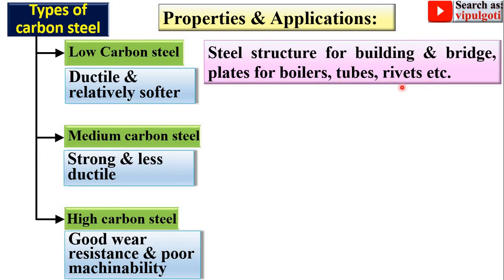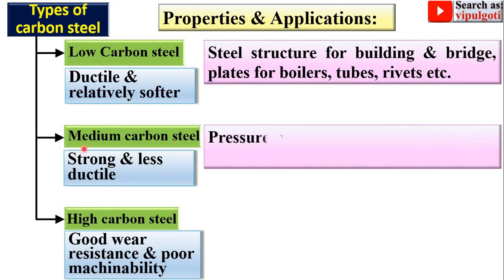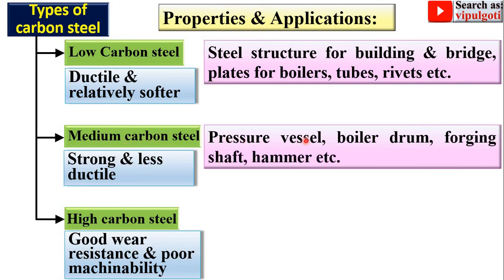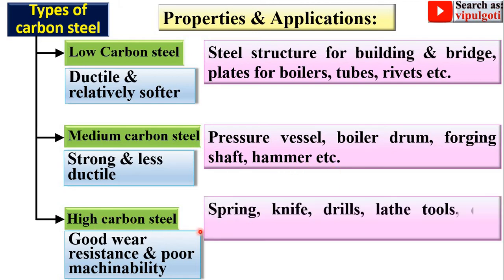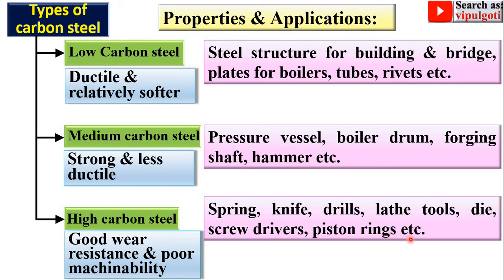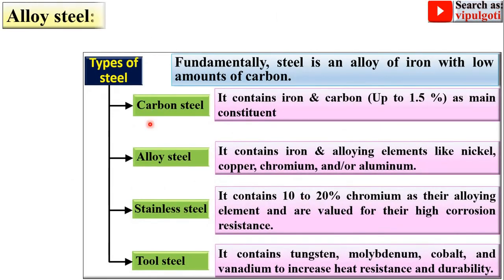Medium carbon steel is used for pressure vessels, boiler drums, forgings, shafts, and hammers. High carbon steel is used for springs, knives, drills, lathe tools, dies, screwdrivers, and piston rings. These are the properties and applications of the corresponding types of carbon steel.